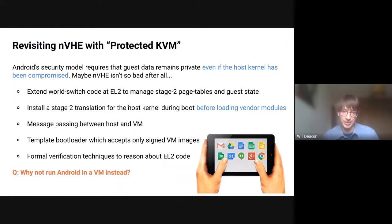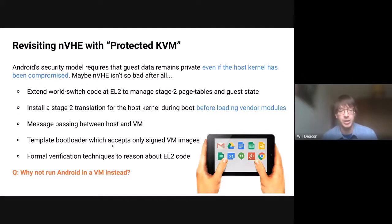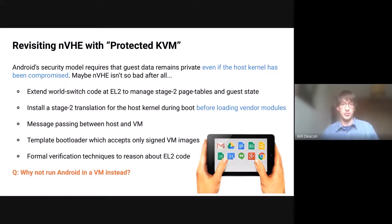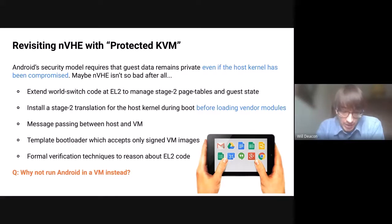With NVHE, though, maybe it's not so bad. We have that world switch code — what if we extend it? We can trust that code without trusting the whole Linux kernel running in the host. We improve the world switch code so it can manage all the guest memory and stops the host kernel from having access to it. We can install a stage 2 translation for the host kernel itself during boot, before we load any third-party vendor modules. We can use message passing for the host and VMs to communicate, ensure the host can't tamper with VM images via a special bootloader that does signature checking, and apply formal verification techniques since the EL2 code is drastically simpler than Linux — much smaller, no scheduling, no preemption.